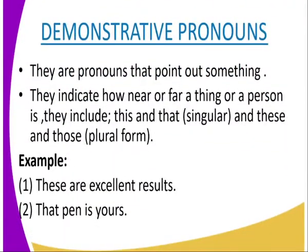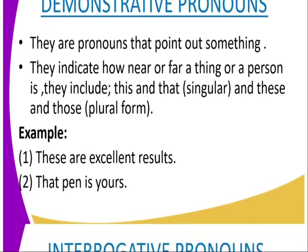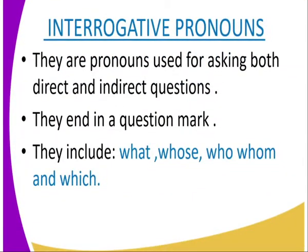Now we look at demonstrative pronouns. These are pronouns that point out how far a thing or a person is. They include 'this' and 'that' in their singular form, and 'those' and 'these' in their plural form. For example: 'these are excellent results'; 'that pen is yours.' Here 'that' and 'these' are the demonstrative pronouns.